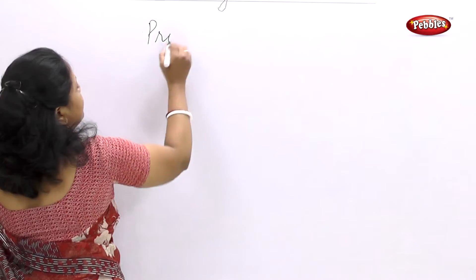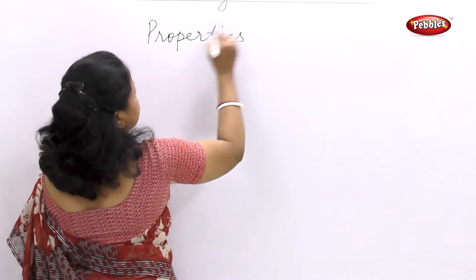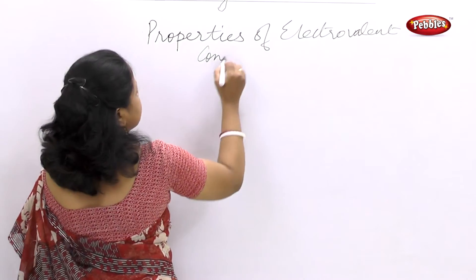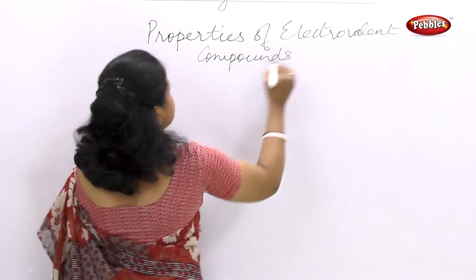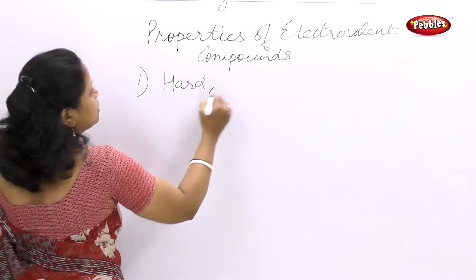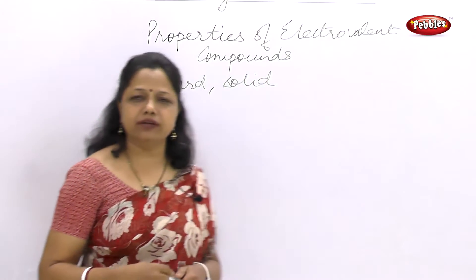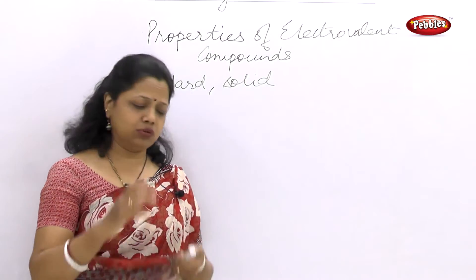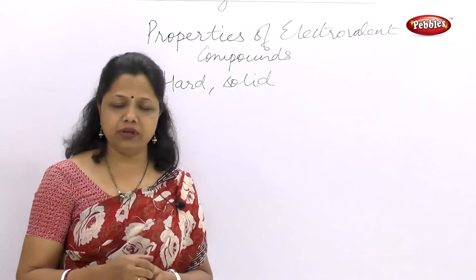We saw what electrovalent compounds are, but what are its properties? When I said that they have a very strong force of attraction, they hold together two ions, and that is why they are quite hard. So the first property of electrovalent compounds: they are hard and they are solid. You all have seen sodium chloride used at home — it is solid and hard. This hardness is due to the force of attraction, which is very strong between a cation and an anion.